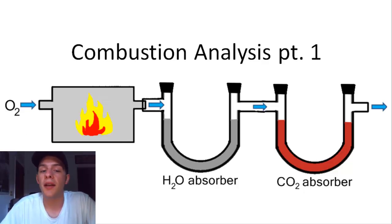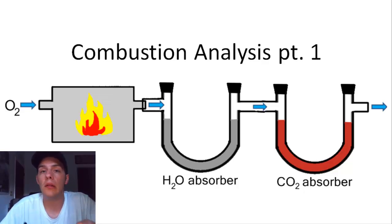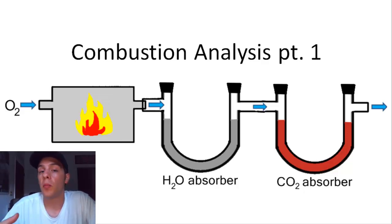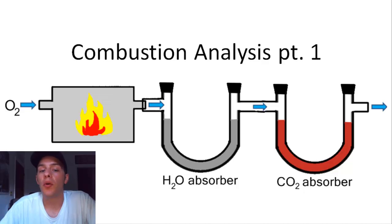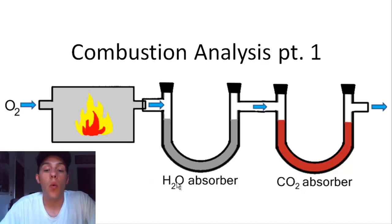Once you have sufficiently purged your system, you ignite your sample. This is usually accomplished by a copper wire that is connected to your sample and also to the leads of a power source. Once you turn on that power source, that sparks up your sample, and because oxygen is continuously being added to the system, that allows your sample to undergo complete combustion. The two products of combustion are water and carbon dioxide.